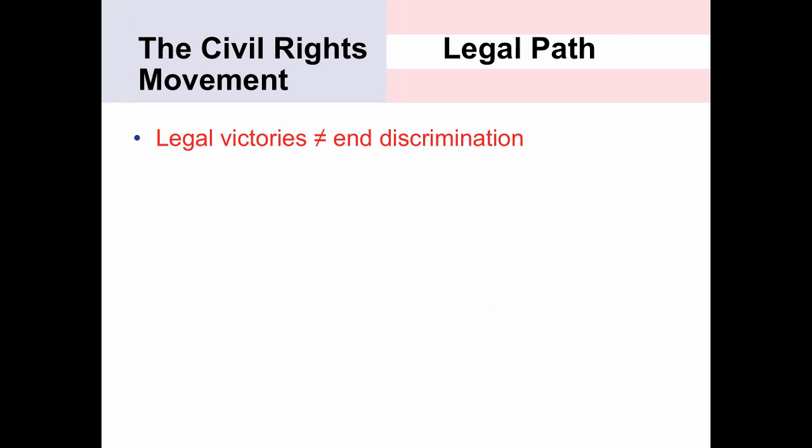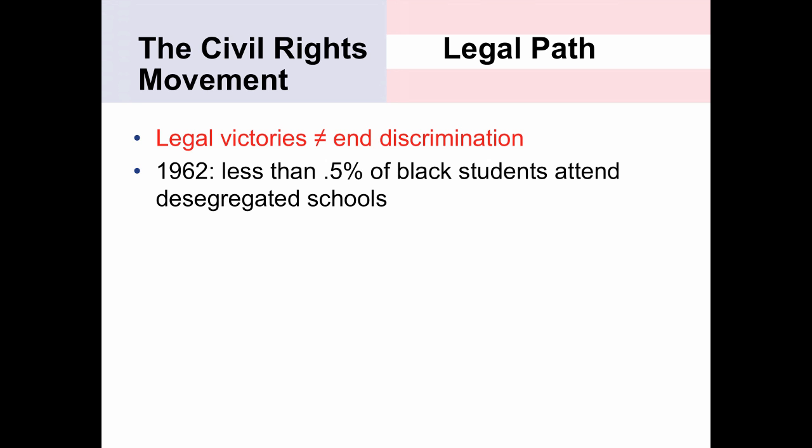Despite all these legal victories, they did not end discrimination. Segregation was still a reality. In 1962 — several years after Brown v. Board of Education eliminated segregation in public schools — only about half a percent of African American students attended a desegregated school. The southern states simply stalled and dragged their feet. The Supreme Court had used the ambiguous language 'all deliberate speed' without specifying a timeline, and the states refused to integrate, making excuses and simply not complying.